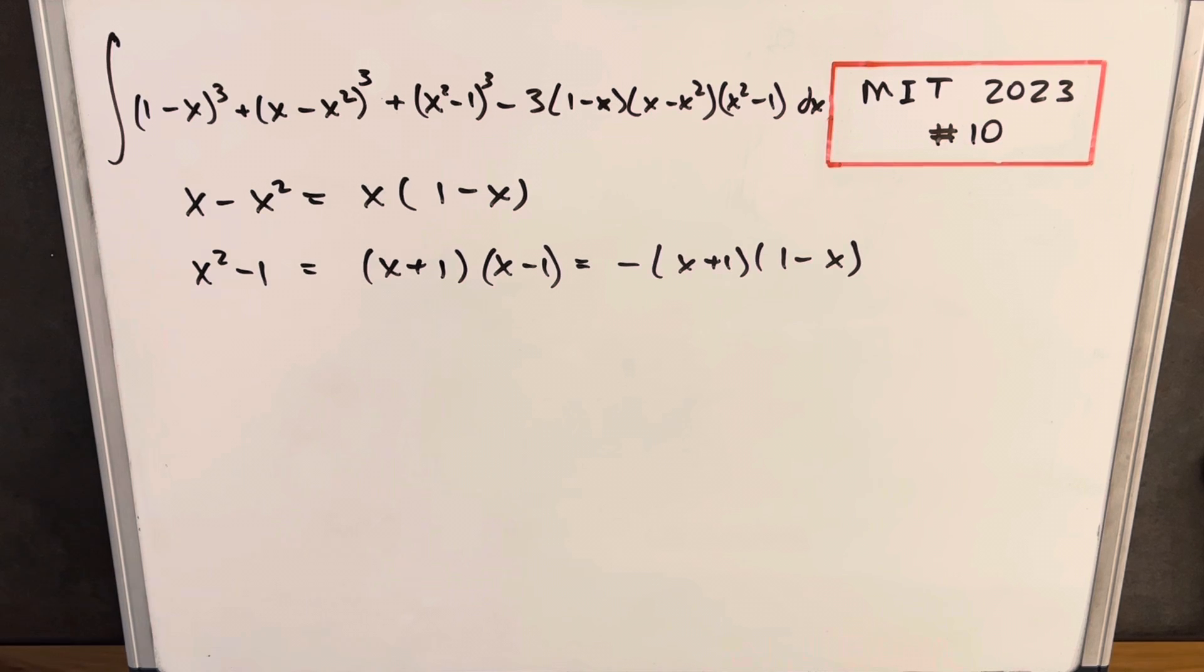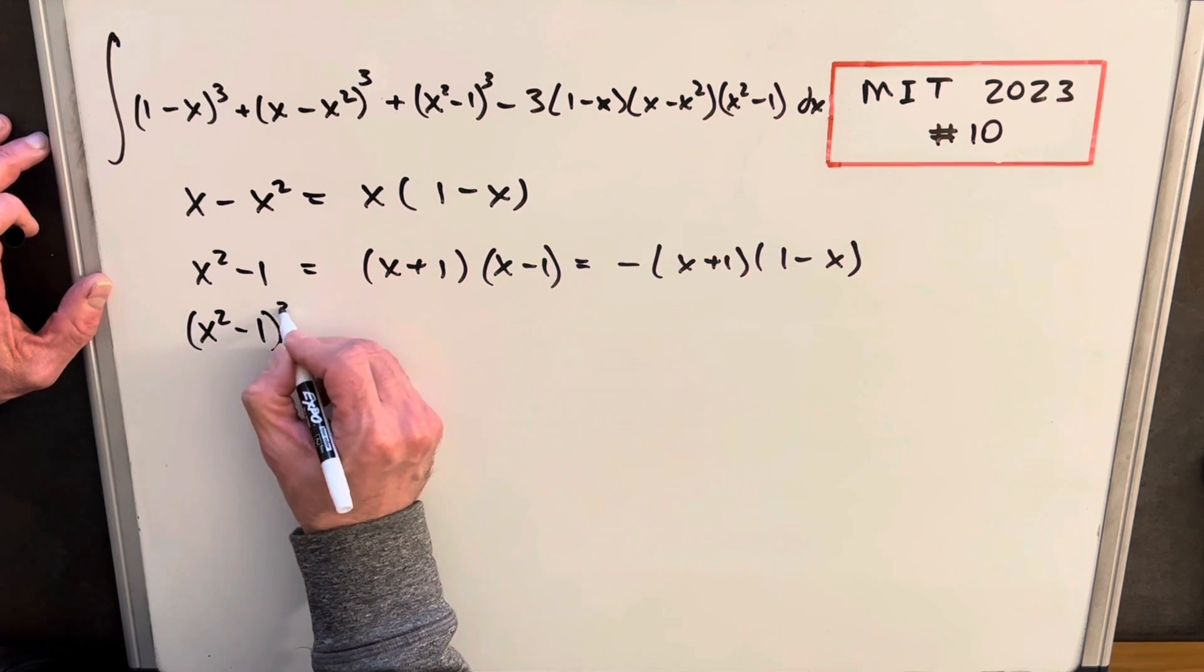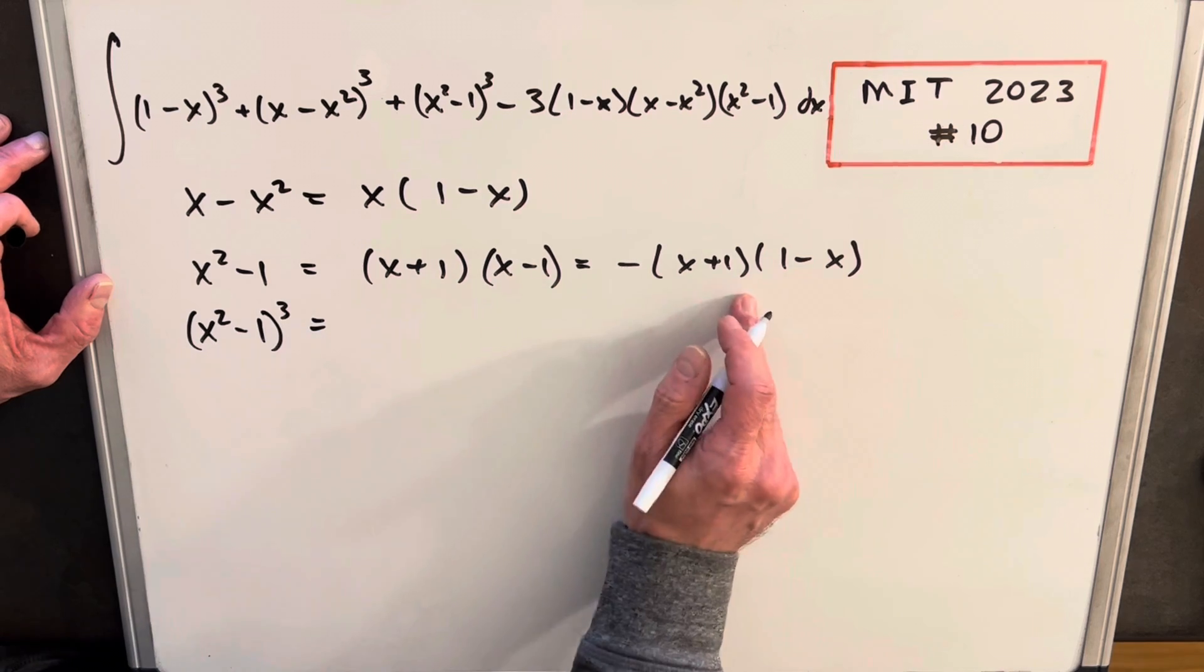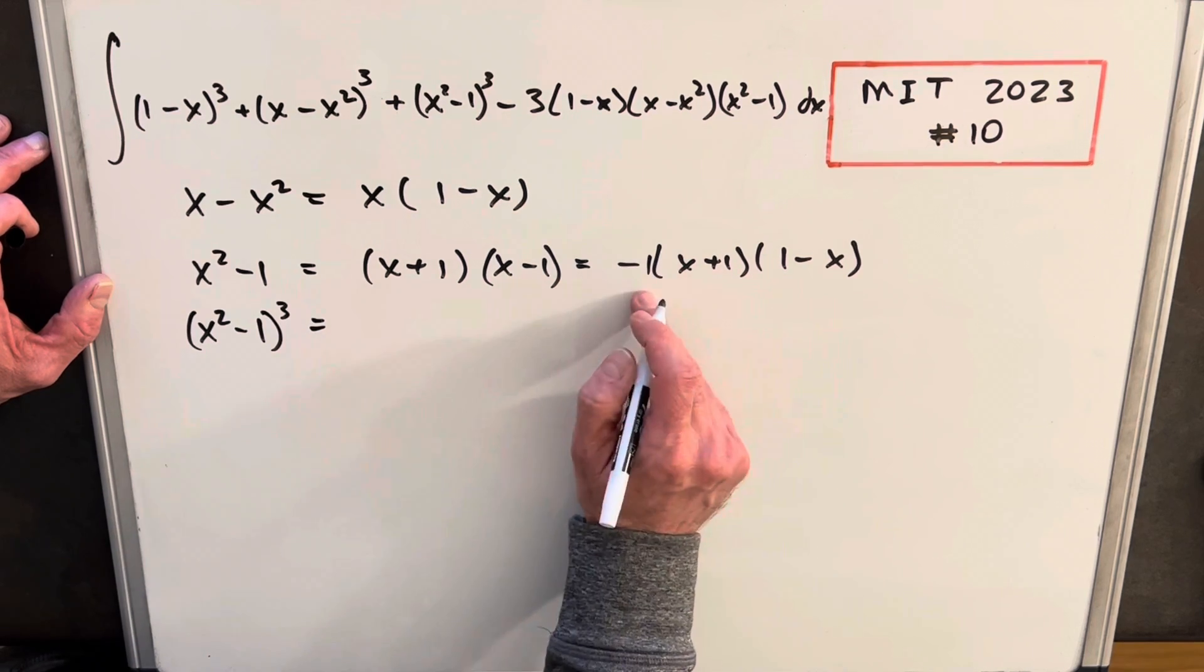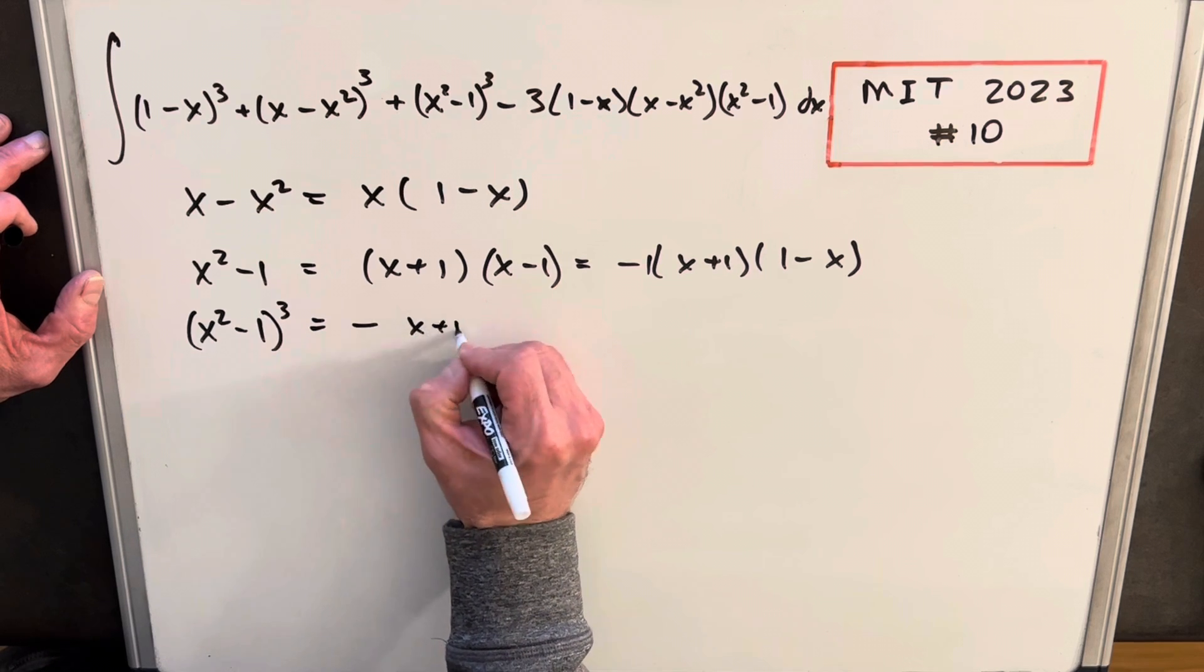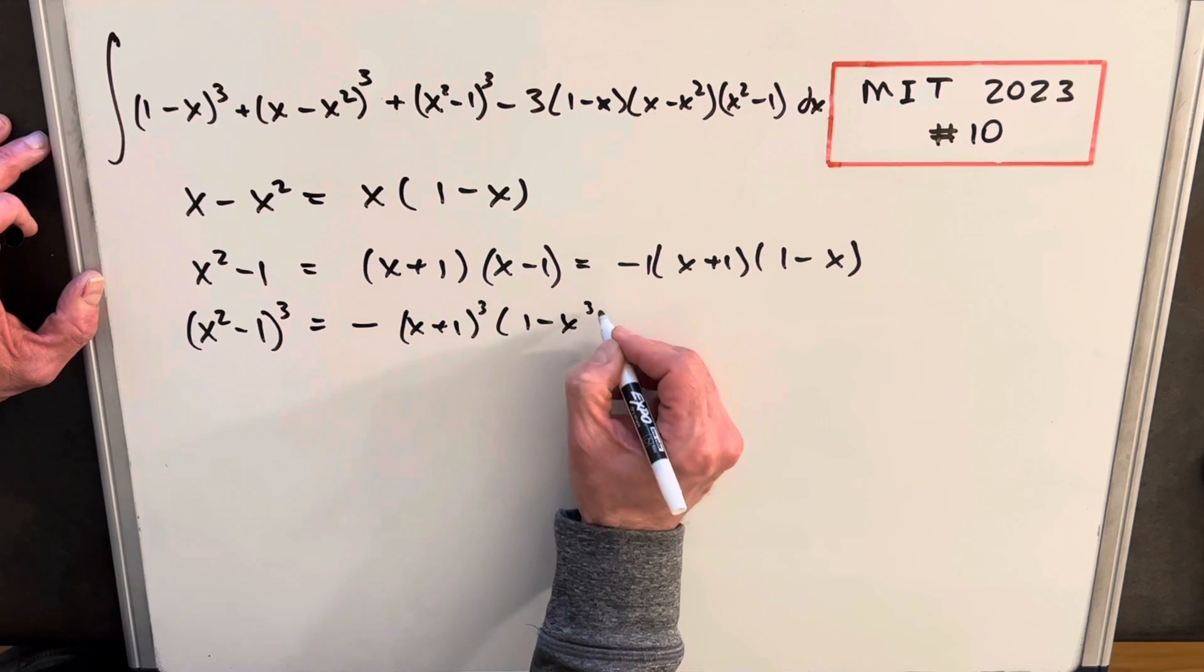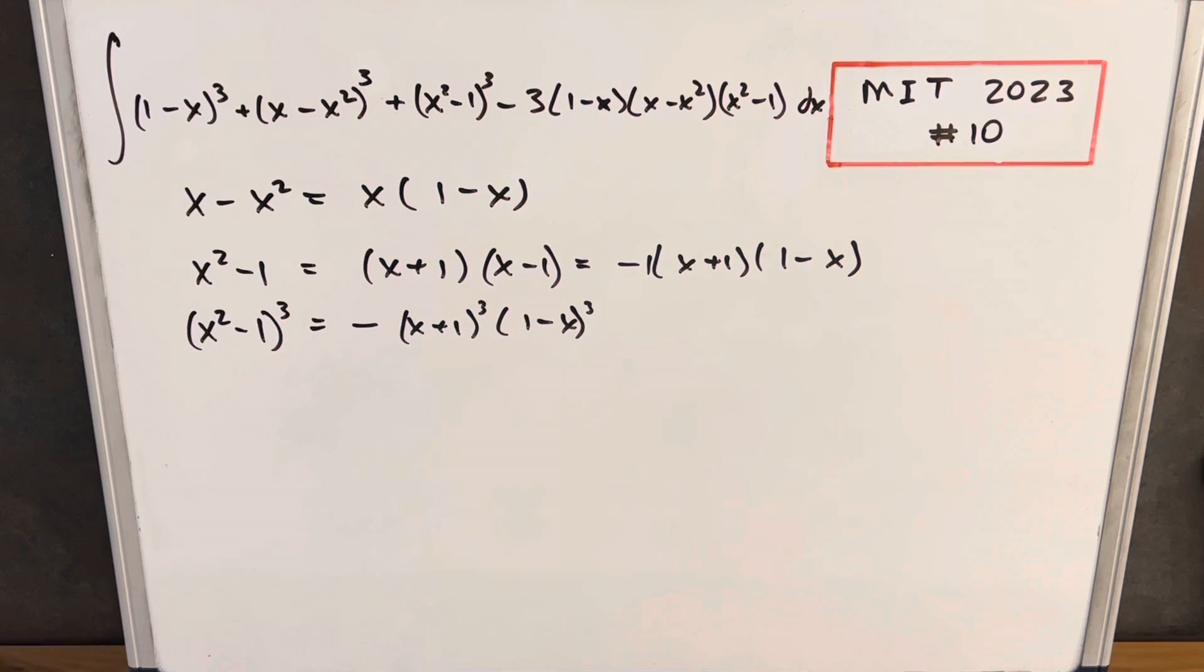Then one other thing I want to do before we put the integral back together is let's look at just x squared minus 1 cubed and what happens using this. Well, we have like a minus 1 in front here and we cube that. We just have a minus sign. We're going to have an x plus 1 cubed and we're going to have a 1 minus x cubed.